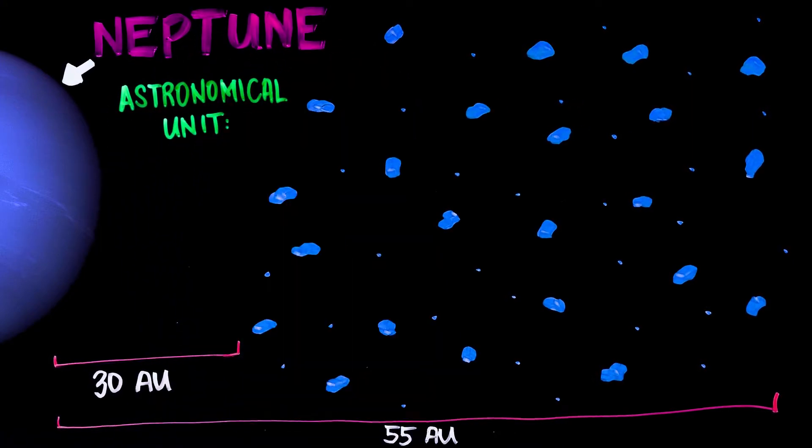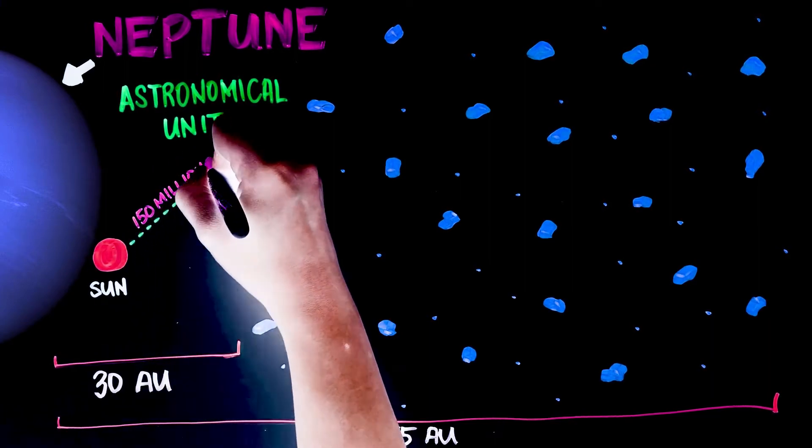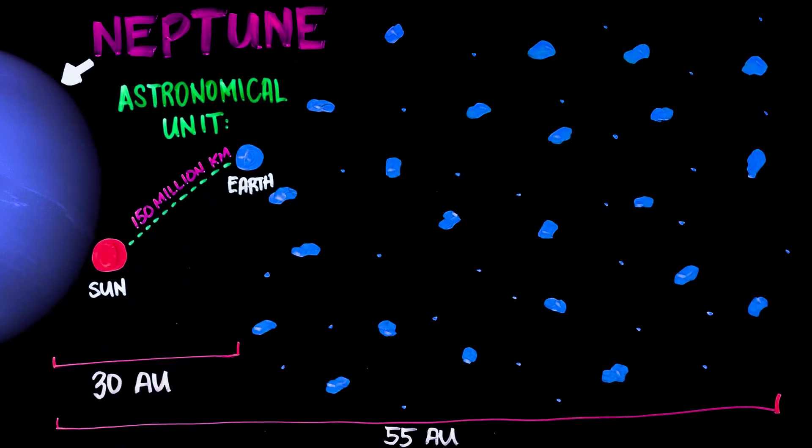An astronomical unit, or AU, is a unit of measurement equal to 150 million kilometers, the distance from the Earth to the center of the Sun.